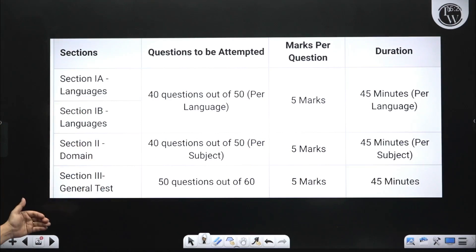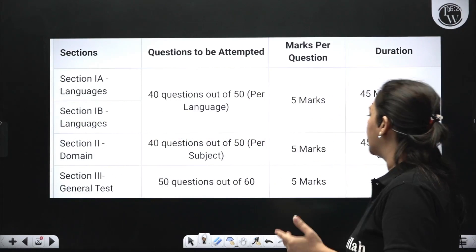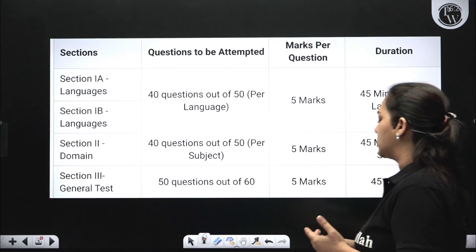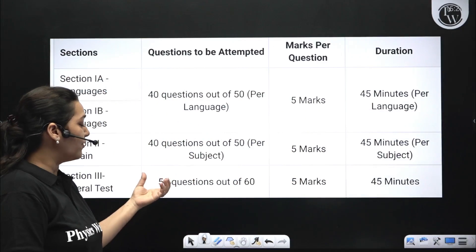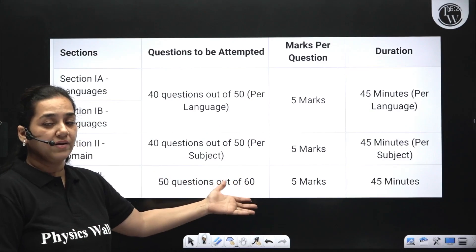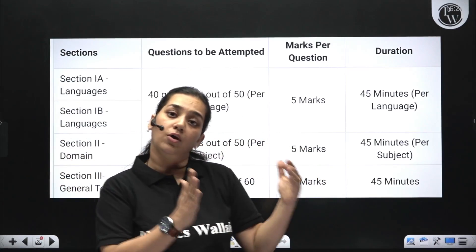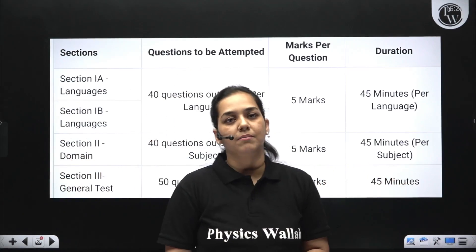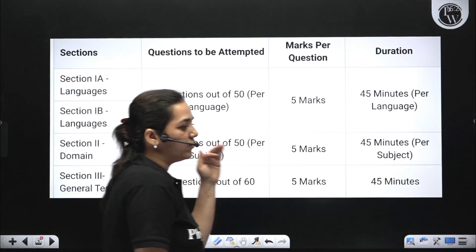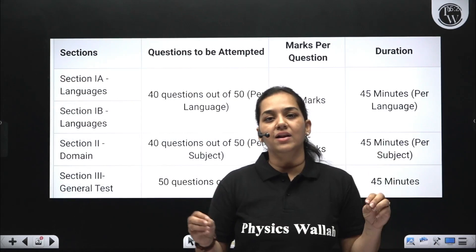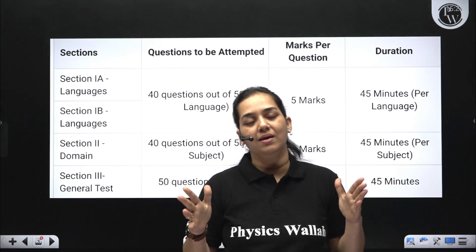Section 2, which is domain specific, again gives you 50 questions of which 40 you have to answer, and the time given is 45 minutes. Section 3, the general test, requires you to answer 50 questions out of 60 given, and the total time is 45 minutes as well. Each question, no matter which section, is a 5 mark question and every wrong answer carries minus 1.